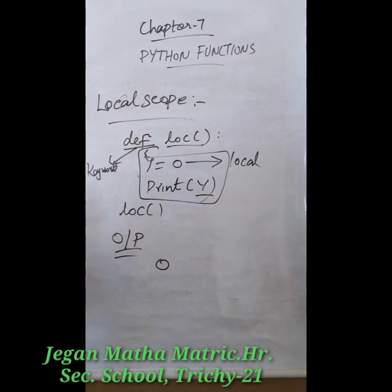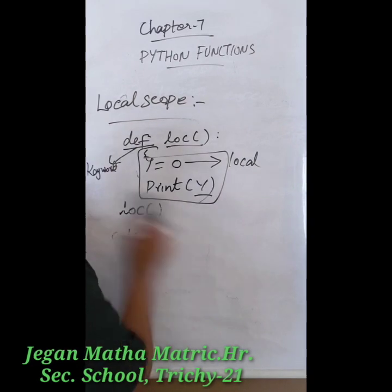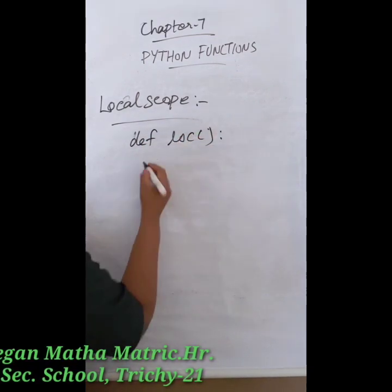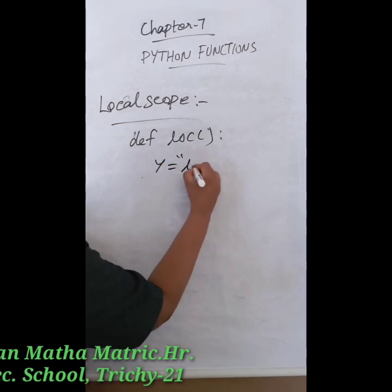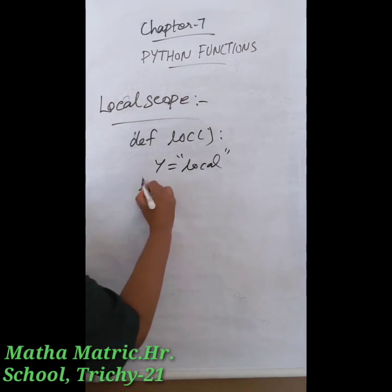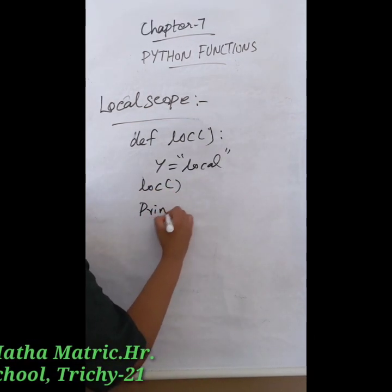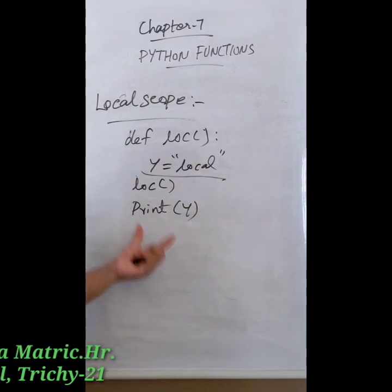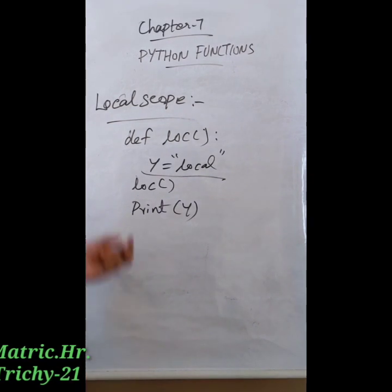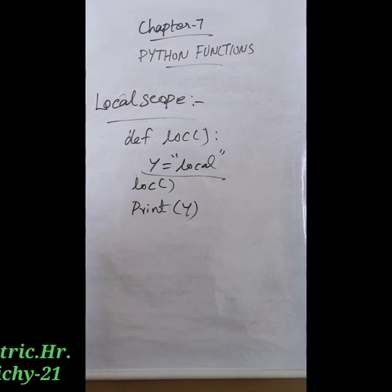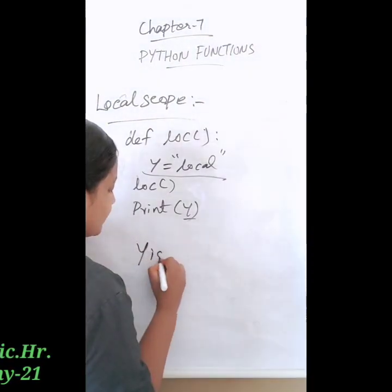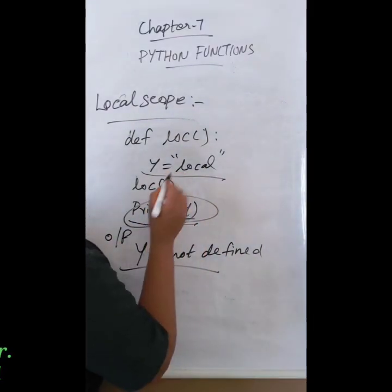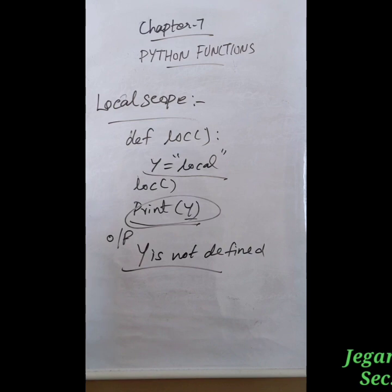Here we declare the y value inside the block, so it is considered a local variable. Now consider if we write a program like this: `def local():` then `y = 0`, then call `local()`, and then `print(y)` outside the block. If we define y inside the function but print it outside the block, when we run this code it gives an error message: 'name y is not defined' — because we are trying to use the value outside the block.